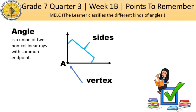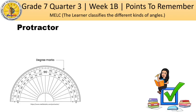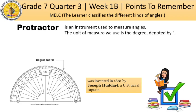In measuring an angle, we use the instrument called the protractor. The protractor is a semicircle with degree marks. It was invented by Joseph Haddad. A protractor is an instrument used to measure angles. The unit of measure used is the degree. Angle measures are between 0 degrees to 180 degrees.